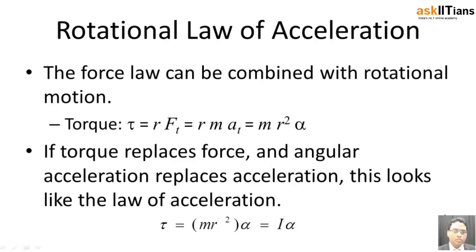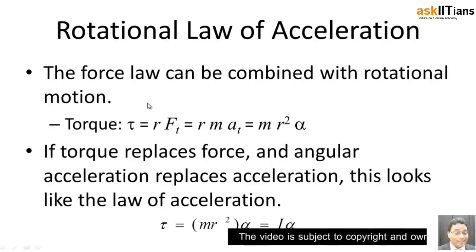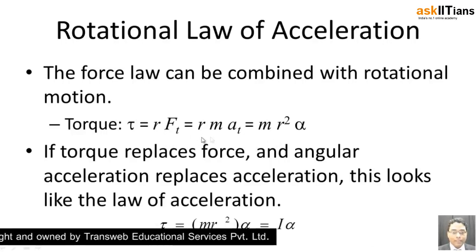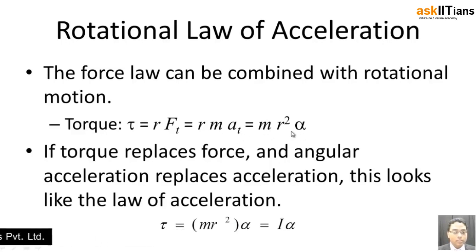We'll continue and try to understand the laws of acceleration and the kind of energy produced when there is rotational motion. As already discussed, torque is nothing but r — the radius — times the tangential force: τ = r × Ft. That Ft can further be written as mass times tangential acceleration, so torque simplifies to mr²α, because of the centripetal acceleration relationship.